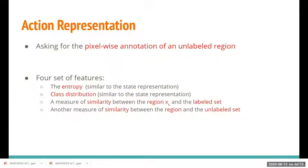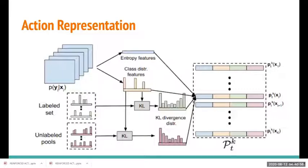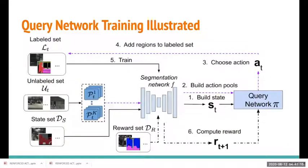As for the action representation, four sets of features are designed. The first two are similar to the state features — normalized count of pixels predicted per category and entropy features. The other two are measures of similarity between a given region X_K and the labeled set and unlabeled set, calculated using KL divergences. As you can see in this image, these four sets of features are concatenated together — entropy features, pixel predictions, and KL divergences between a region and both the labeled and unlabeled sets — to create one compact representation for a given action.